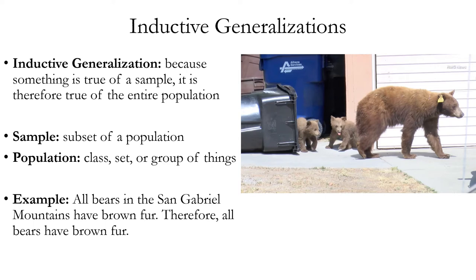Inductive generalization is the type of argument where you conclude that something is true of a sample, so it therefore must be true of the entire population. Inductive generalization is not a fallacy — it's a type of inductive reasoning. Understanding this type of reasoning is key to understanding the various ways it can go wrong. We use the concepts from statistics of a sample and a population. A population is the set or group of things you're generalizing about; the sample is the subset you've examined. In inductive generalization, you conclude that because the sample has this pattern of properties, the whole population does as well.